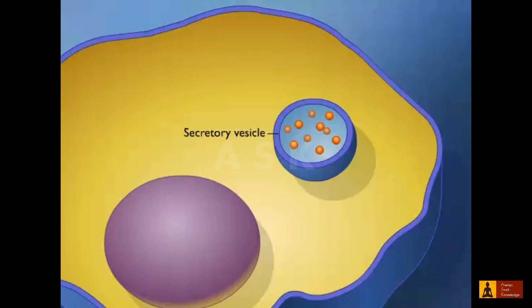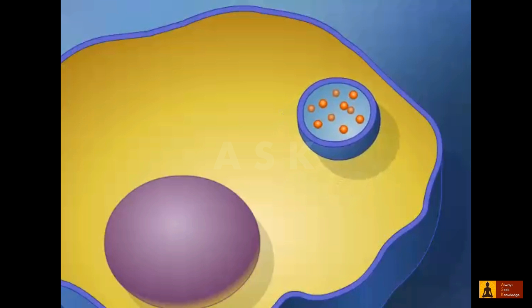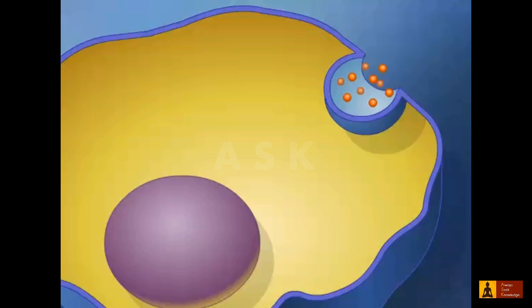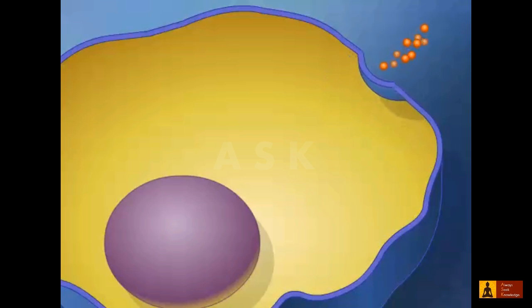Exocytosis is the reverse of endocytosis. This process results in the discharge of material from vesicles at the cell surface to the outside of the cell.